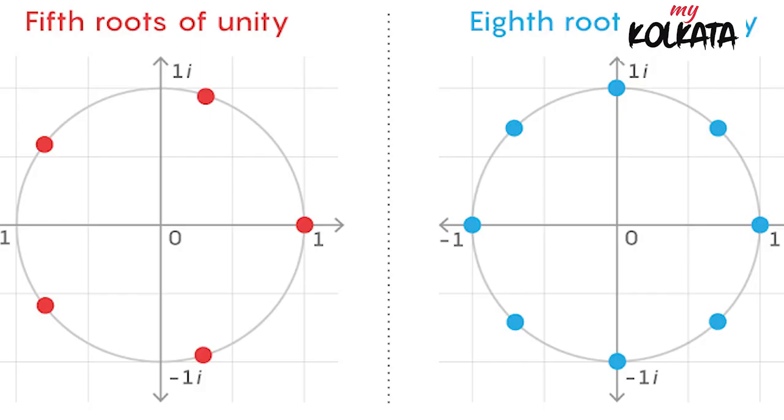Commuting means that A times B is B times A. So how do you build all the number systems that have that property?